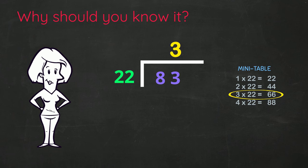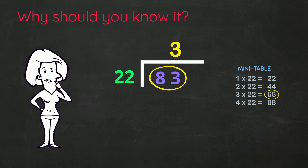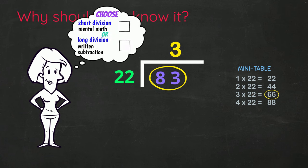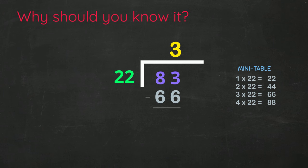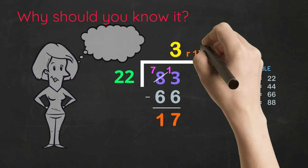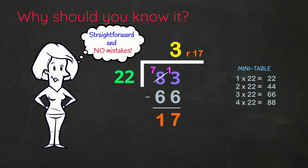If we have a 2 digit divisor we could get a 2 digit remainder. Here, 3 x 22 is 66. There's a big difference between these numbers. I prefer to do a written subtraction here to find the difference. 3 minus 6? Can't do it! Have to borrow a 10. 8 becomes a 7. There's the 10 I've borrowed. 13 minus 6 is 7 and 7 minus 6 is 1. Straightforward and NO MISTAKES!